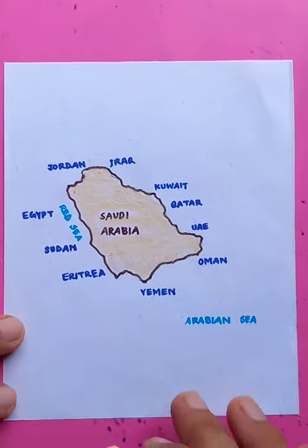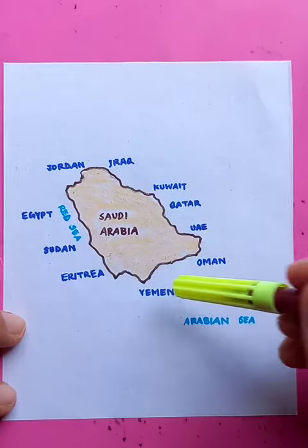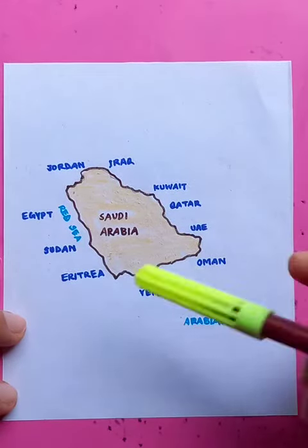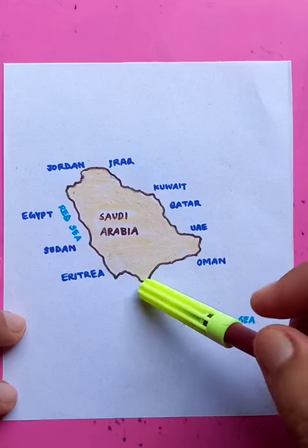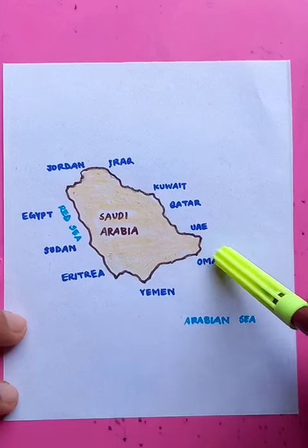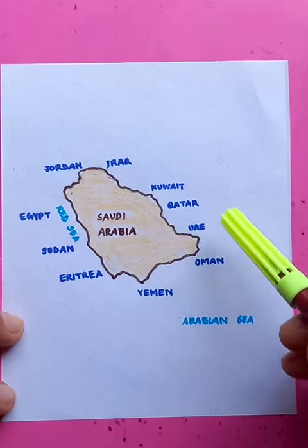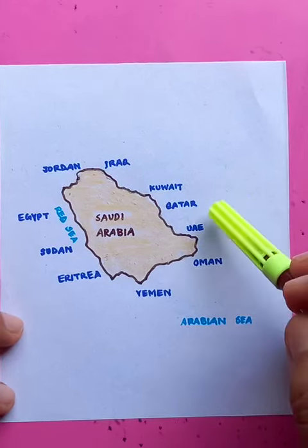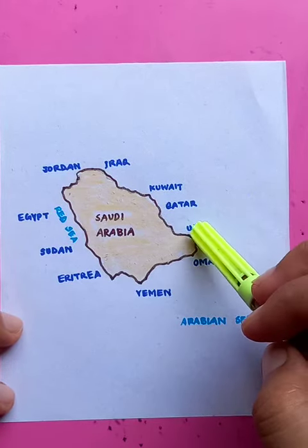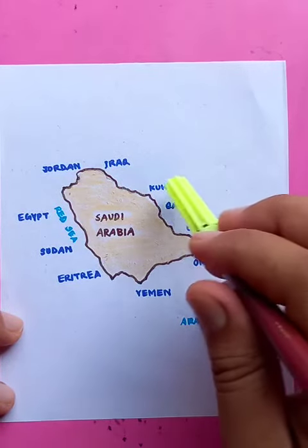There's the country Saudi Arabia. It has borders with many countries. You can see the Arabian Sea here, and Yemen on the south, Oman in the south-east corner, United Arab Emirates on the eastern side, and Qatar on the eastern side.